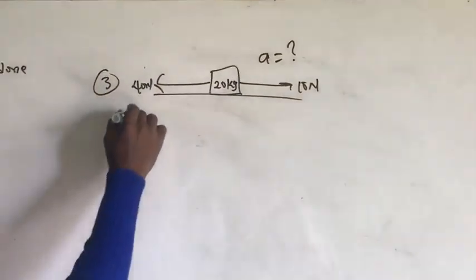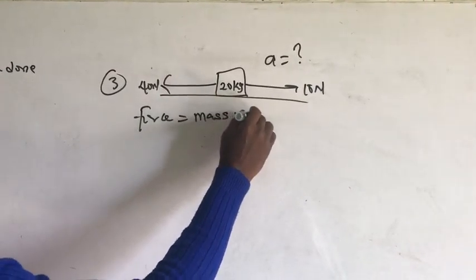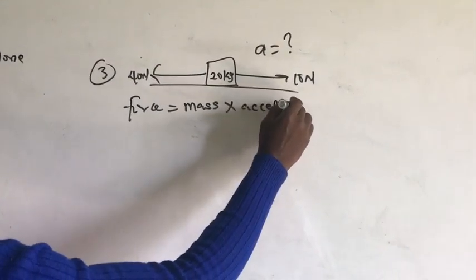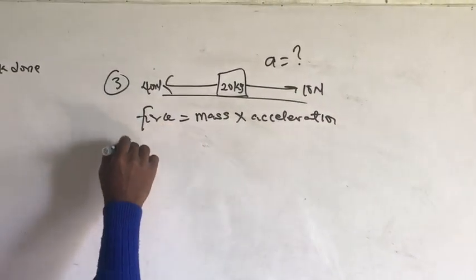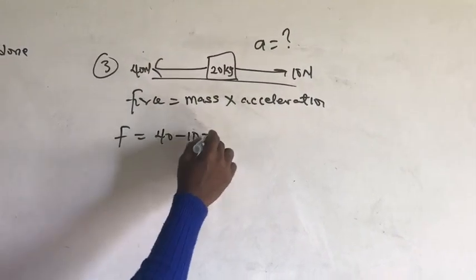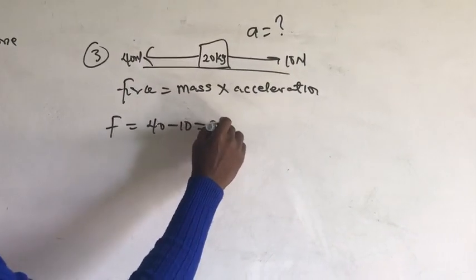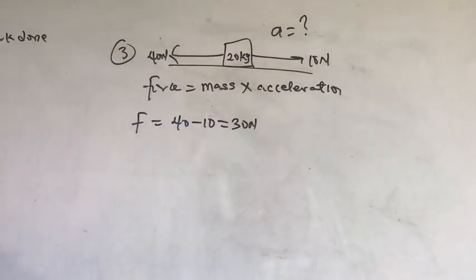How do we do that? We know that force is mass times acceleration. Now, what force are we going to look at? The force we are going to look at is, the force we are going to use is the 40 minus 10. 40 is 40 minus 10. That's a 30 newton force. In the direction of the 40 newton force. This is the greater force of the 2.